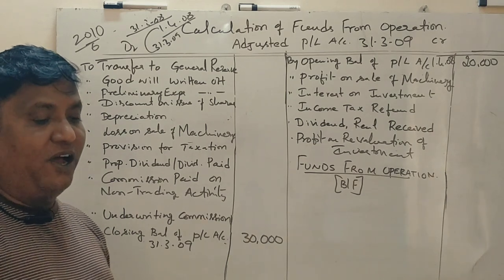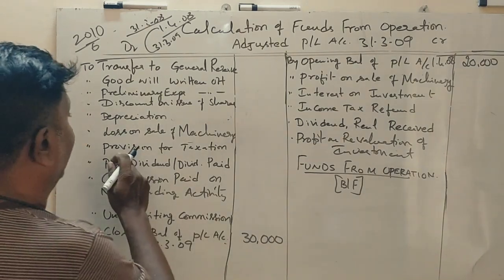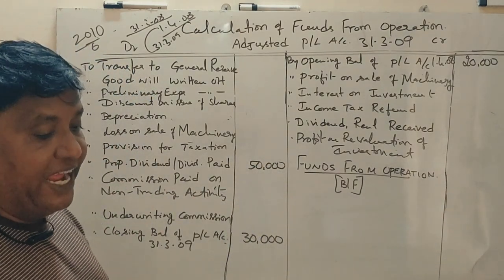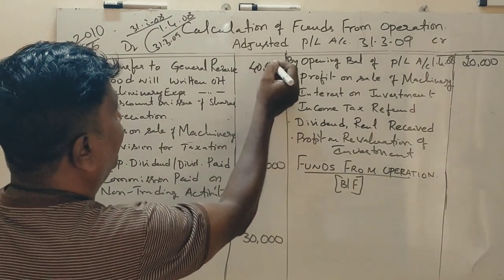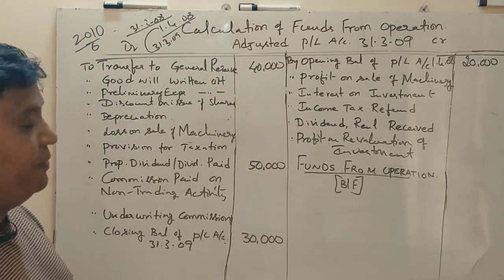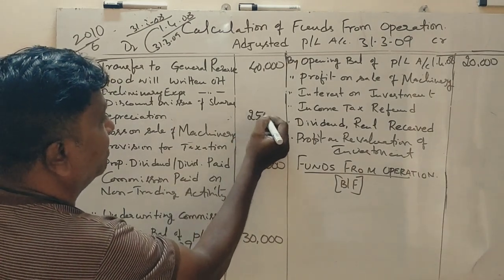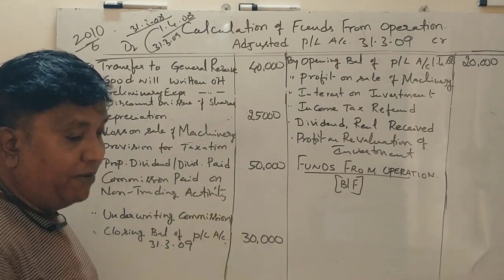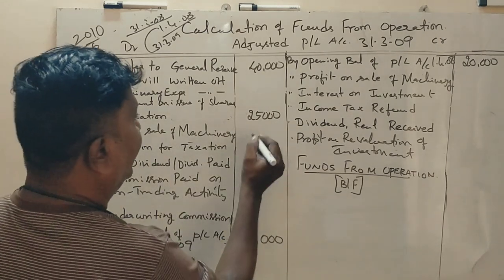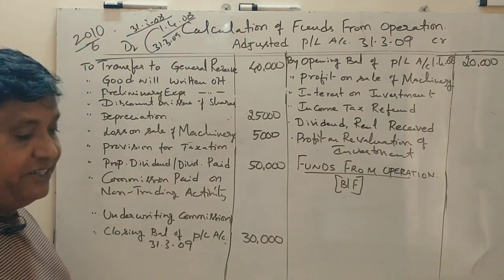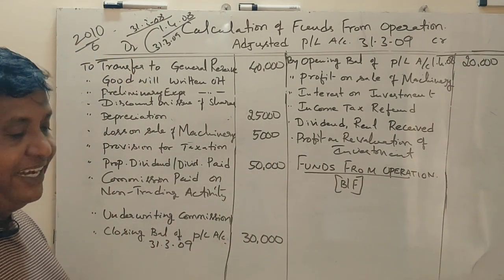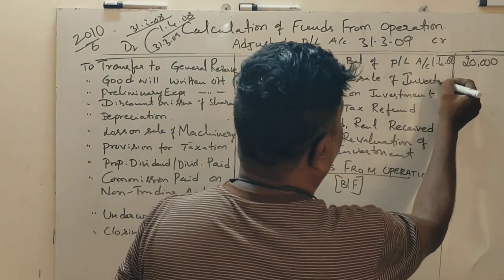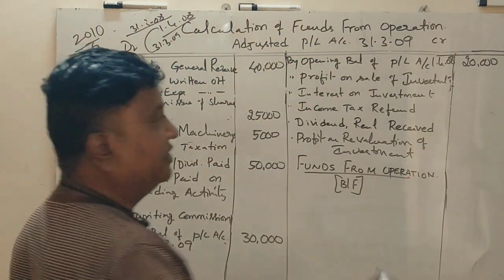Provision for dividend made is Rs. 50,000 — that is proposed dividend. Transfer to reserve is Rs. 40,000 debit. Depreciation written off is Rs. 25,000 debit. Loss on sale of old machinery is Rs. 5,000. Sale of investment resulted in a profit of Rs. 3,000.